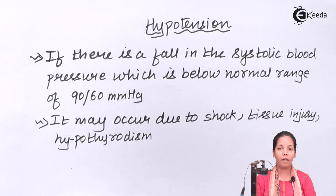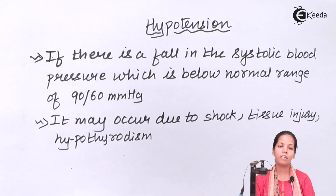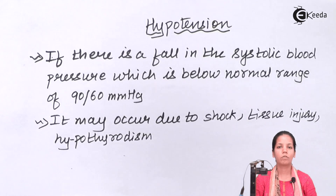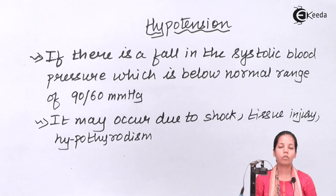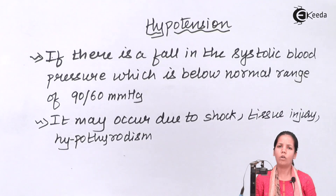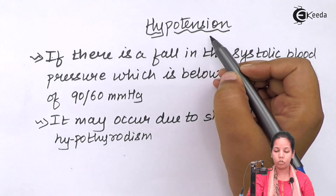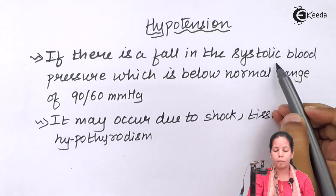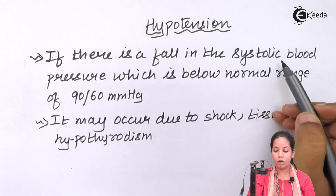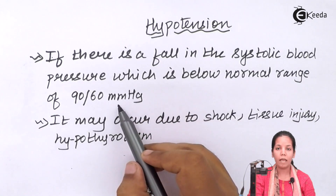If someone's systolic blood pressure falls below 90/60 mmHg, then that person would have Hypotension. In Hypotension, the blood pressure goes for a toss. It's a low BP condition which leads to restlessness, inability to do work, a lot of weakness, and there is no energy left in that person to do work. Basically, Hypotension occurs if there is a fall in the systolic blood pressure below the normal range of 90/60 mmHg.